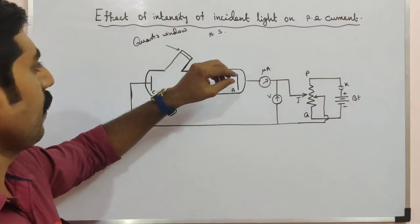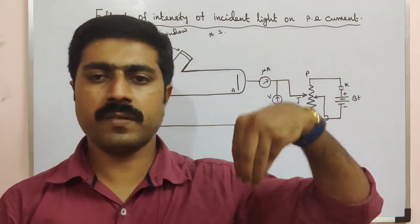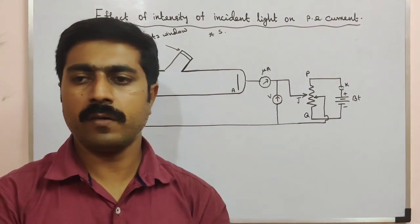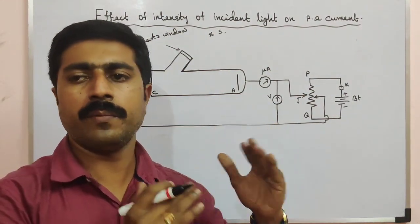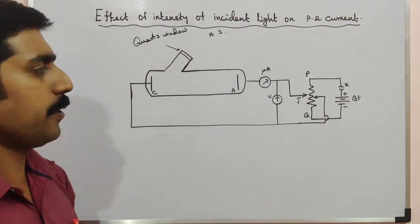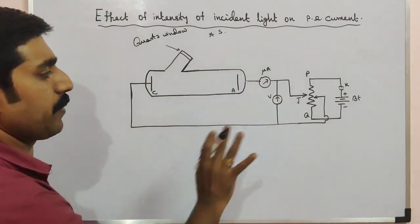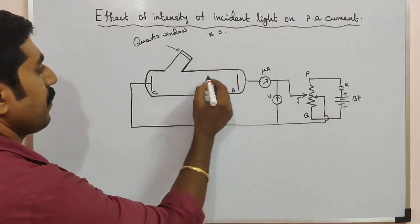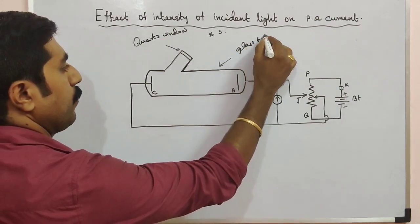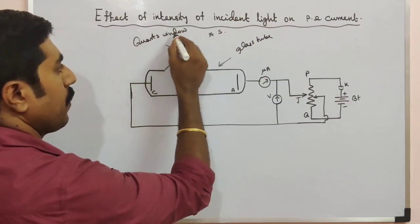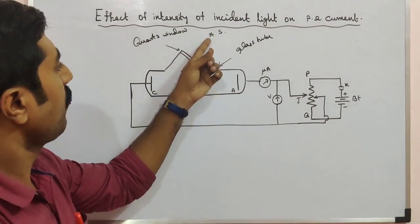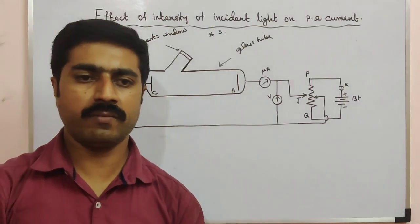Incident light on a metal surface — we are varying the intensity and seeing the photoelectric current value. This is the experimental setup. This is nothing but a glass tube — an evacuated glass tube — with a quartz window. Here we are using electromagnetic waves, UV rays.